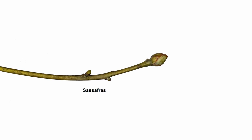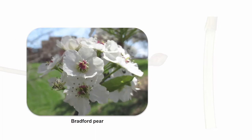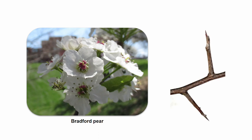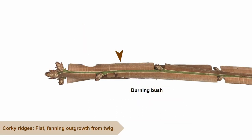Now, there are some more uncommon identification features I'd like to mention. Some species of tree have twigs with a distinguishable odor — if you were to scratch a twig from a sassafras tree and sniff it, you would notice it has a very similar smell to that of Froot Loops cereal. Bradford pears are an ornamental tree that can arm their twigs with thorns to help protect themselves against herbivores. Cottonwood trees, along with several other species, have buds that secrete resin — an organic substance that is insoluble in water. The yellowish-brown resin of the cottonwood twig can be seen here. Burning bushes are green twigs that have distinctive, flat, woody, corky wings or ridges.